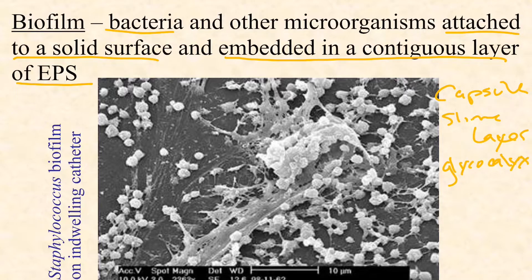Here in this image, you see a pure culture of staphylococci growing in a biofilm. You can see the gooey, sticky EPS material that has them attached to the surface on a patient's urethral catheter. This would cause a persistent urinary tract infection if this was not dealt with.